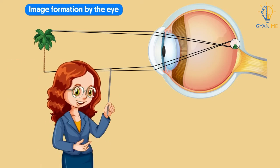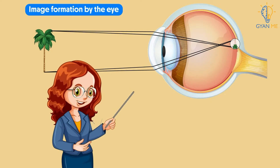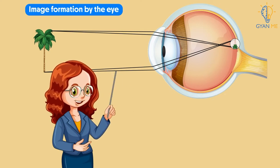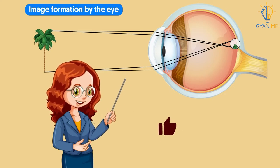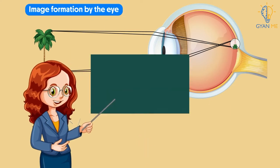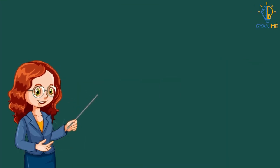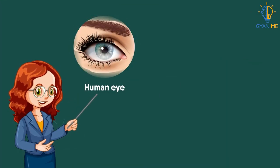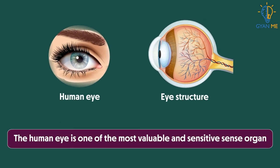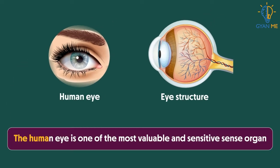Image formation by the eye is as complex as understanding how the brain thinks so fast. But don't worry, we won't make it that complex. So let us today learn about the human eye and its structure. The human eye is one of the most valuable and sensitive sense organs.